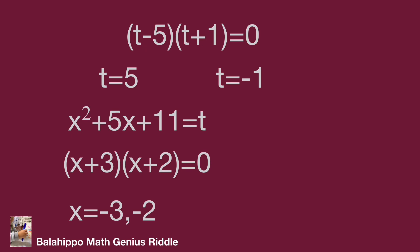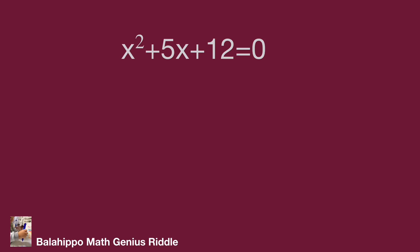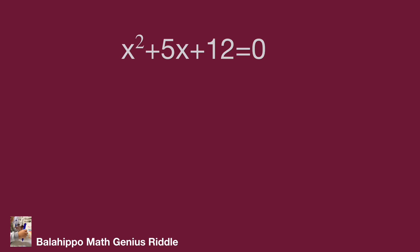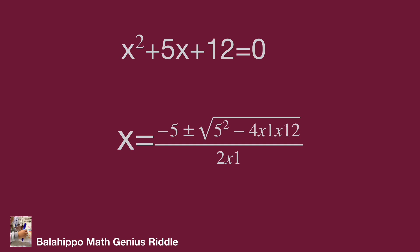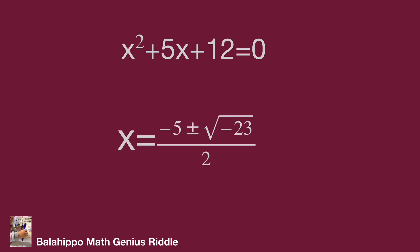When t equals minus 1, then x squared plus 5x plus 11 equals minus 1, giving x squared plus 5x plus 12 equals 0. Using the quadratic formula x equals minus b plus or minus square root of b squared minus 4ac, over 2a, we get x equals minus 5 plus or minus square root of 25 minus 48, over 2, which simplifies to x equals minus 5 plus or minus i times square root of 23, over 2.